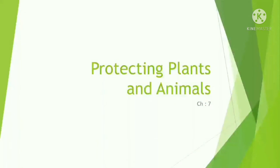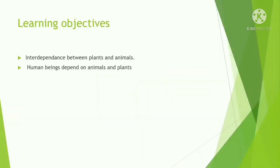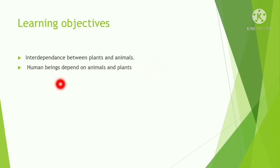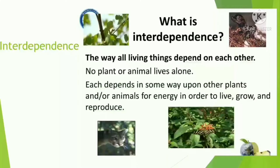Today we will start a new chapter, Chapter 7: Protecting Plants and Animals. In this chapter we are going to learn the interdependence between plants and animals, and we will also learn how human beings depend on animals and plants. First of all, we have to know what is the meaning of interdependence.